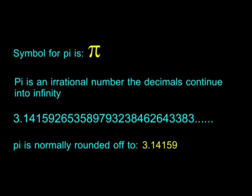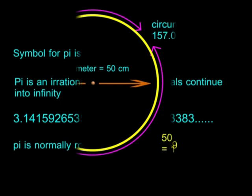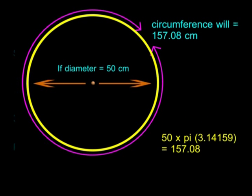But you must bear in mind that the decimal places in pi continue into infinity. Pi is generally rounded off to 3.14159 decimal points, for convenience sake. Because pi is a mathematical constant, you can calculate the other parts of a circle using pi. For example, if you knew the diameter of a circle was 50 centimeters, the circumference will be 50 times pi, which is 50 times 3.14159, which equals 157.08.